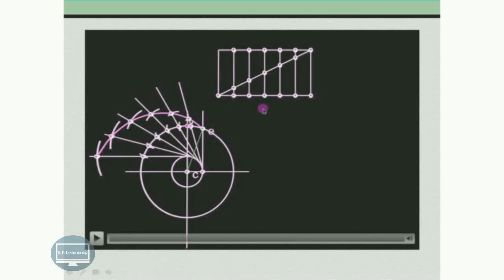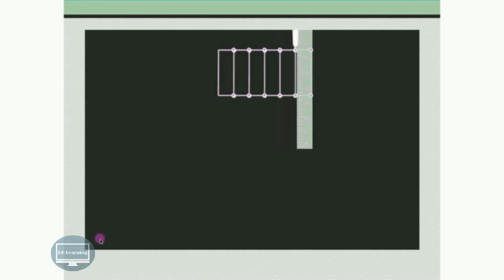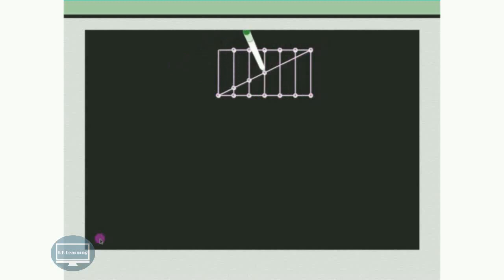The out stroke is 90 degrees, which is 6 cm in length, divided into 6 equal parts. Now project these points on the opposite side and draw vertical lines. We then join the diagonal, and these vertical lines intersect the diagonal at points a, b, c, d, e, and f as seen earlier.